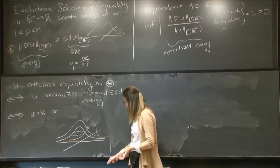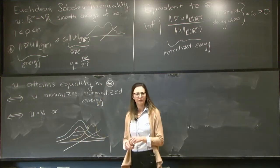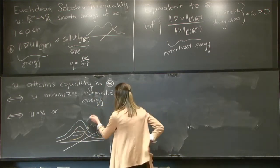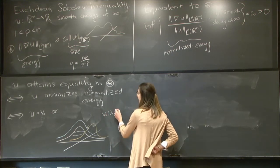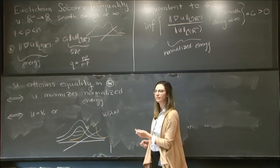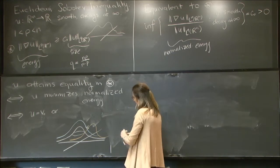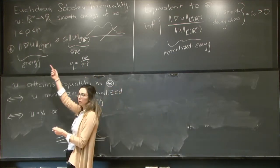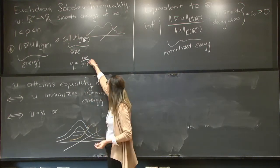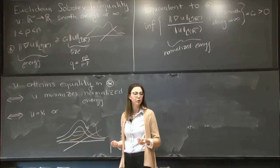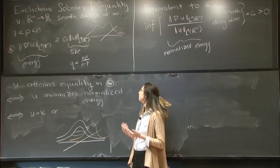And the final symmetry of this inequality that's less obvious, just looking at it, is a dilation symmetry. So this is to say that if I consider the function v0 of lambda x for some positive constant lambda, then both sides of this inequality scale in exactly the same way. In fact, that's where this value of q comes from.